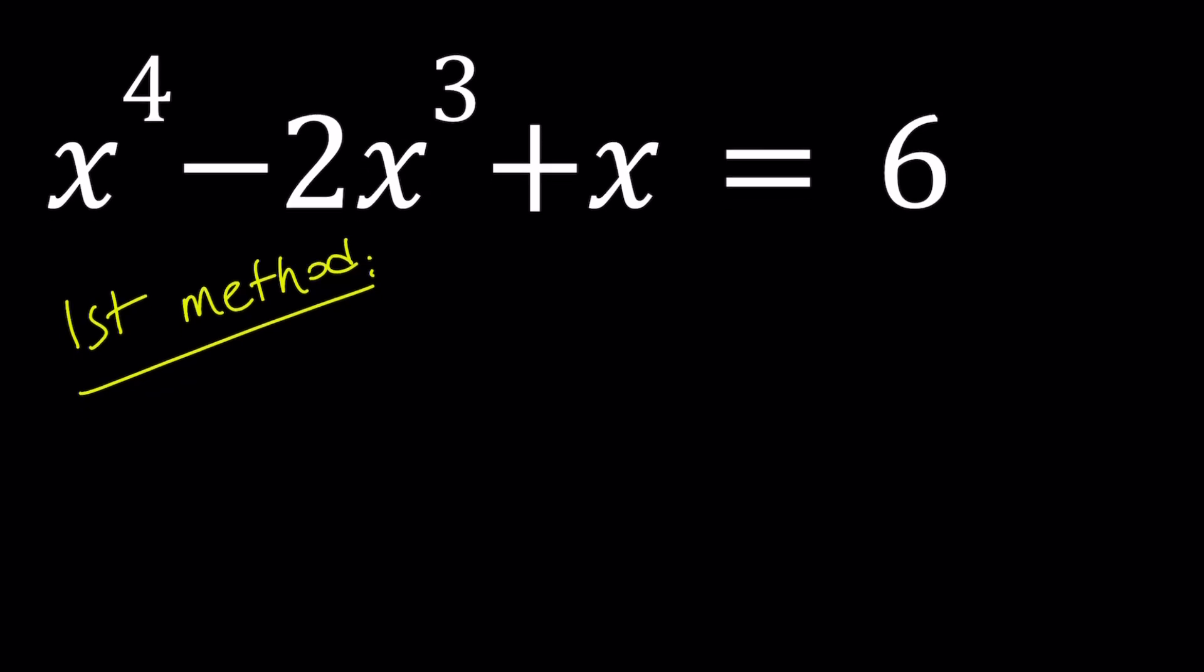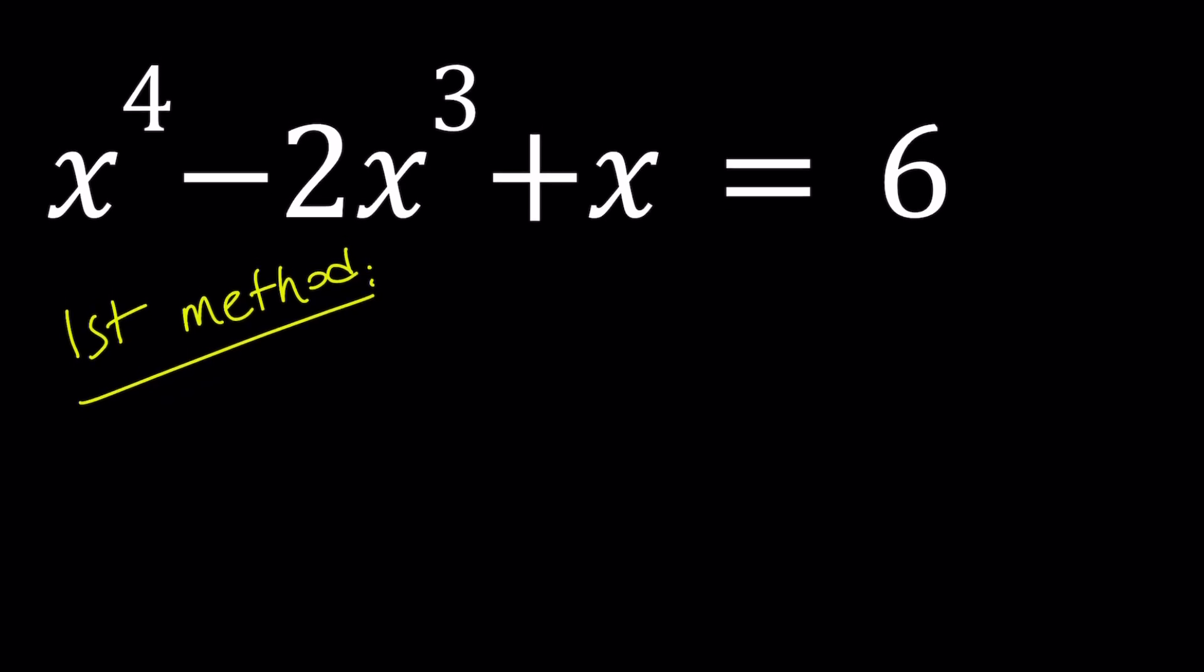I'm going to put everything on the same side: x to the 4th minus 2x cubed plus x minus 6 equals 0. For these kinds of equations, especially cubic and higher degrees, we want to be able to factor it. Because there's no general formula for quintic and higher, unfortunately, and that's very sad.